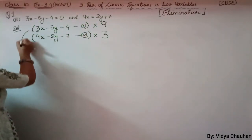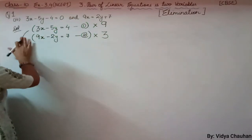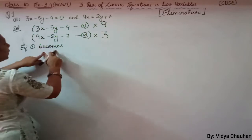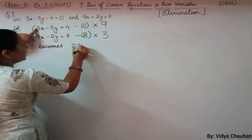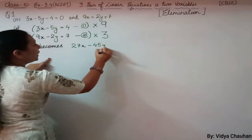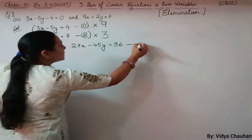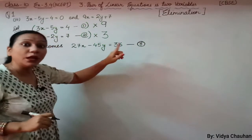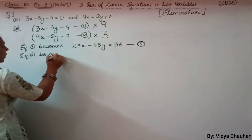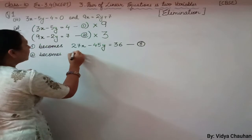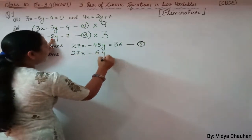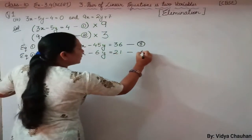After multiplication, equation 1 becomes: 27x minus 45y equals to 36 — let us call this equation 3. Similarly, equation 2 becomes: 27x minus 6y equals to 21 — let us call this equation 4.